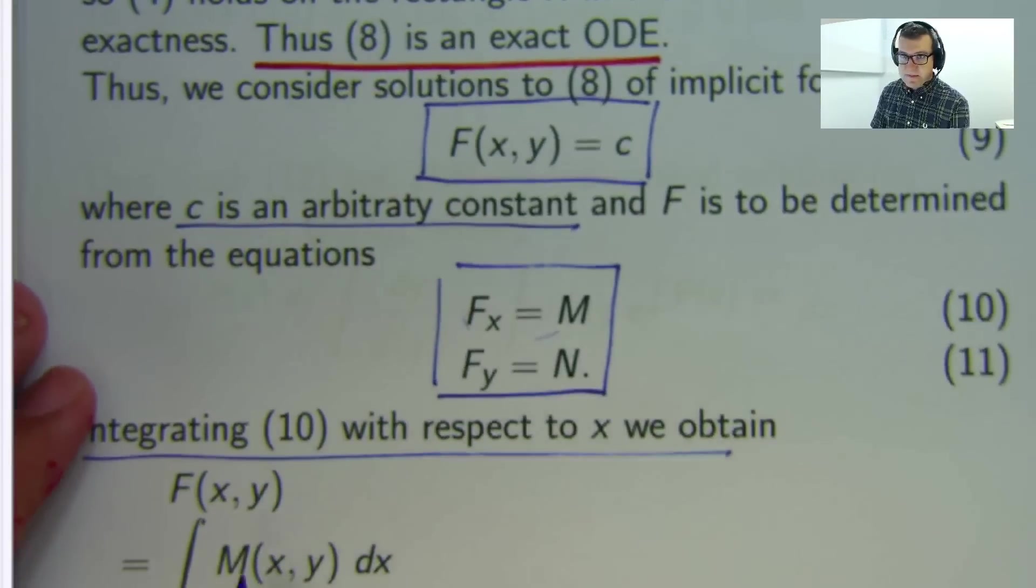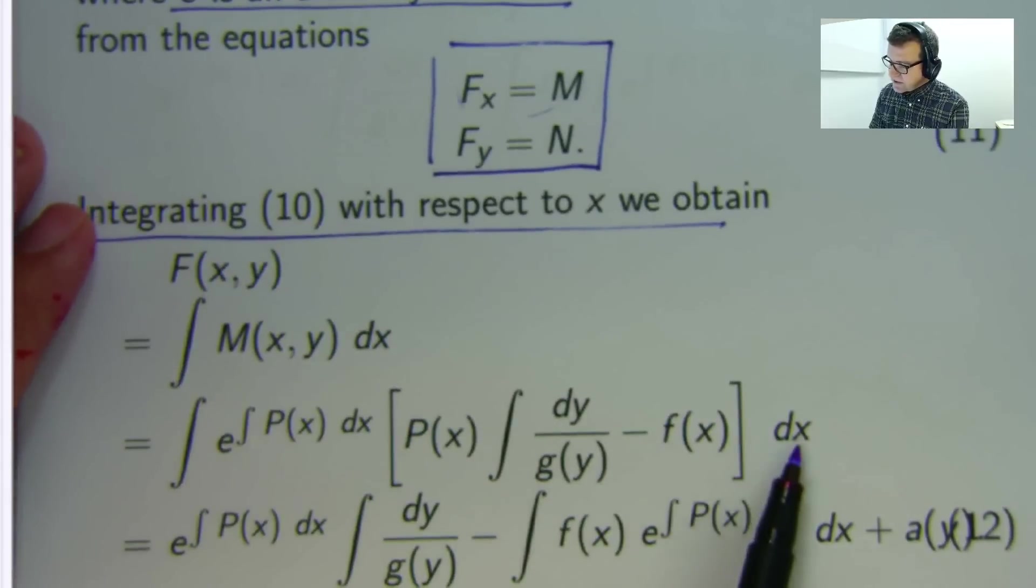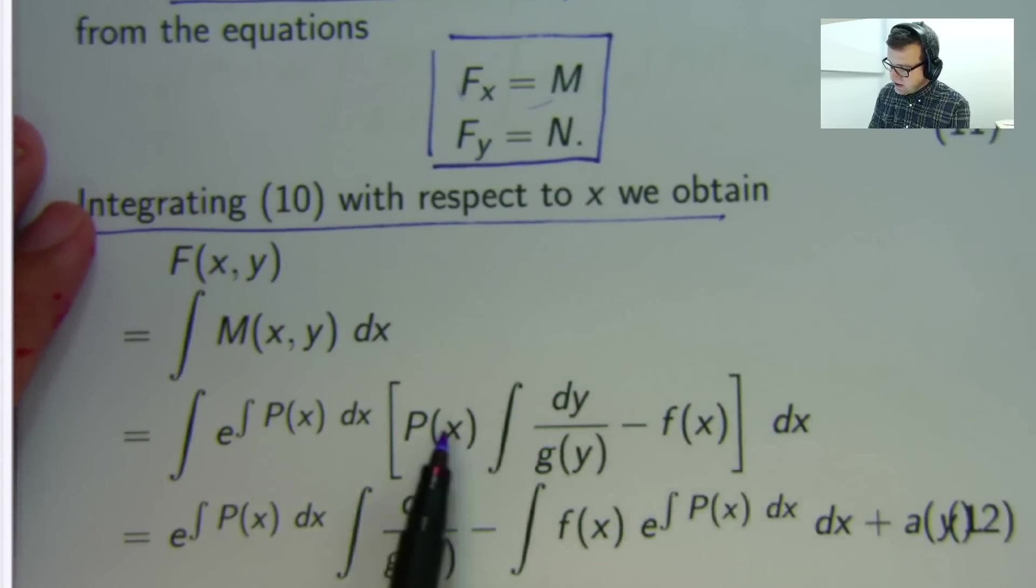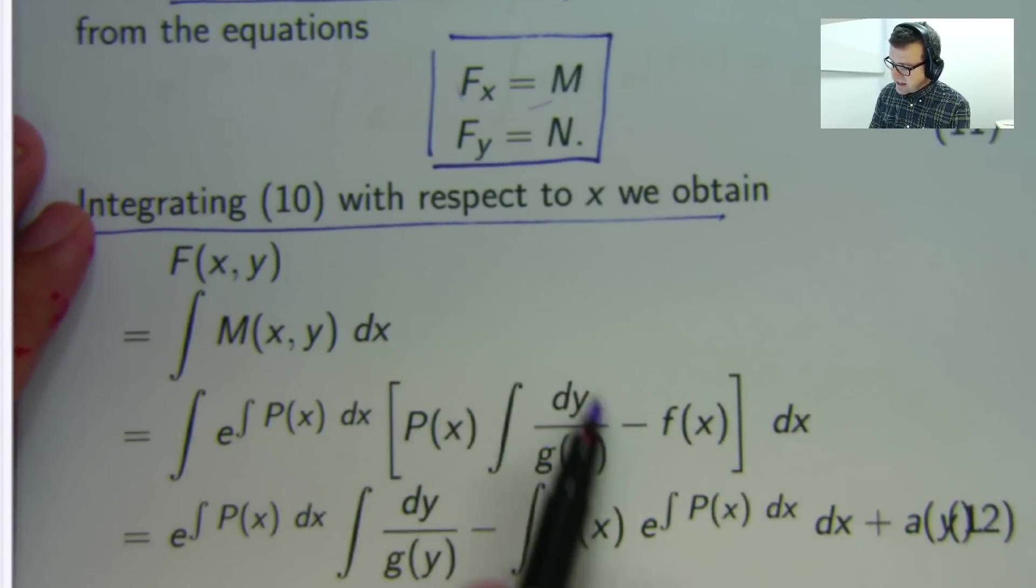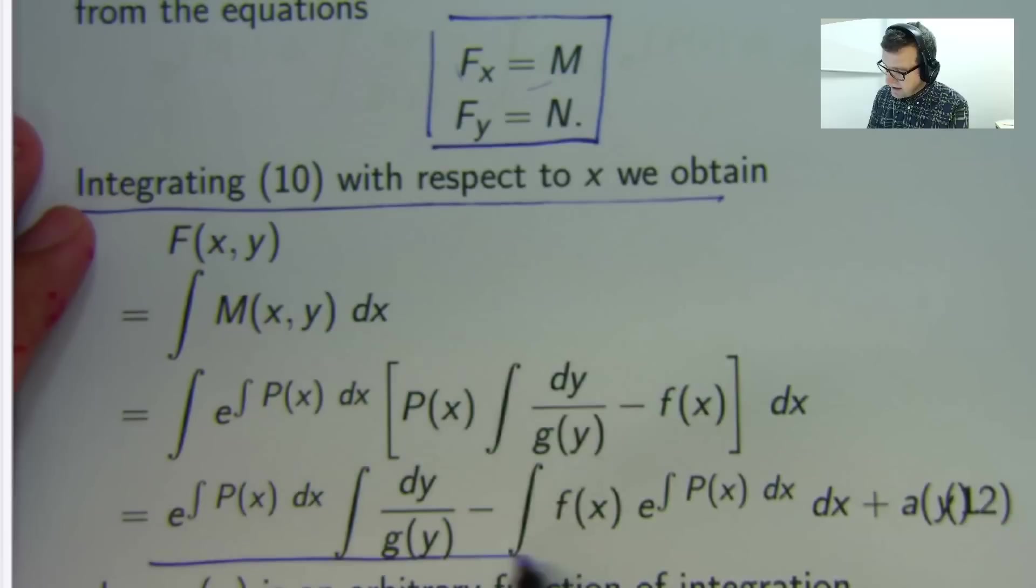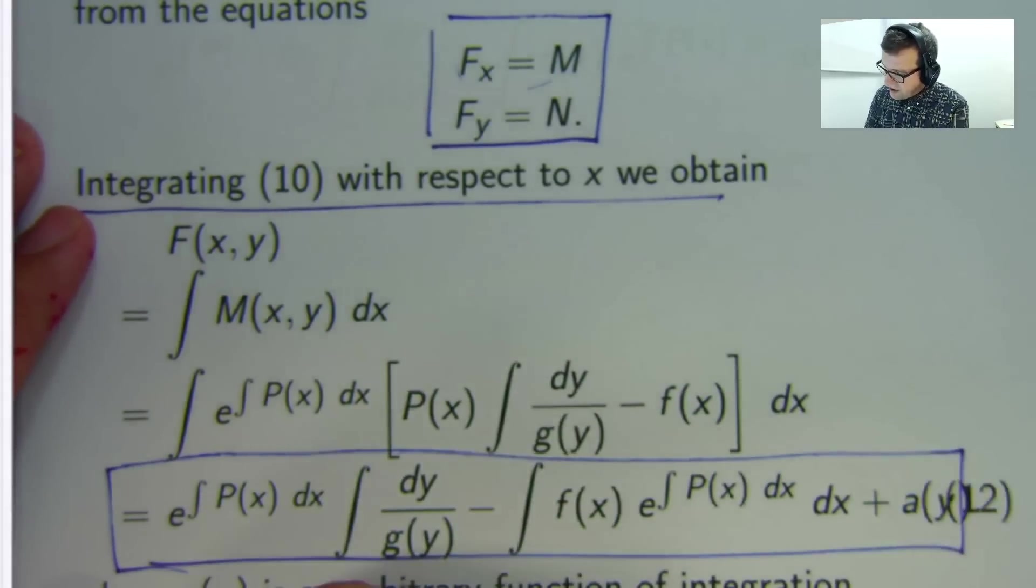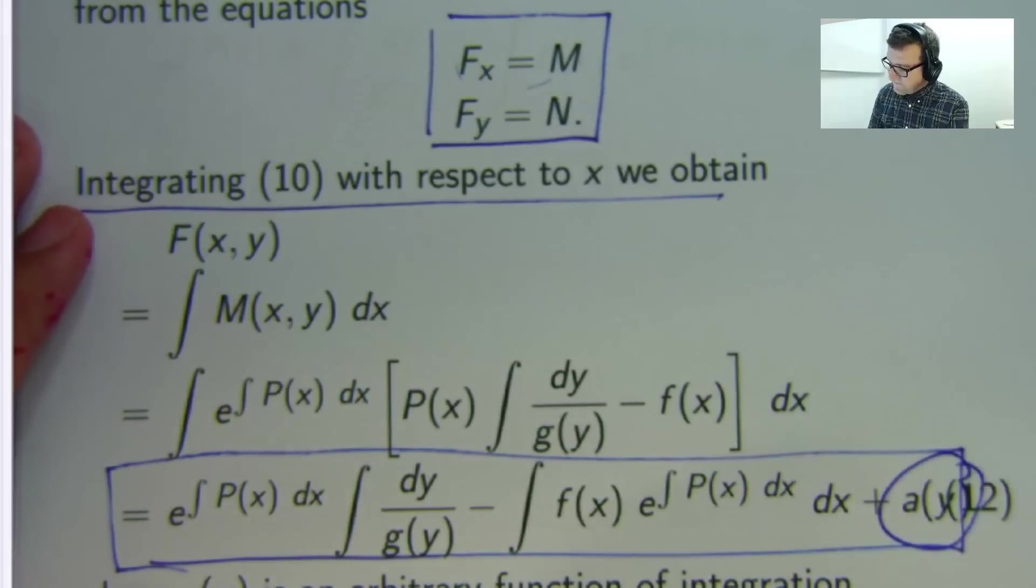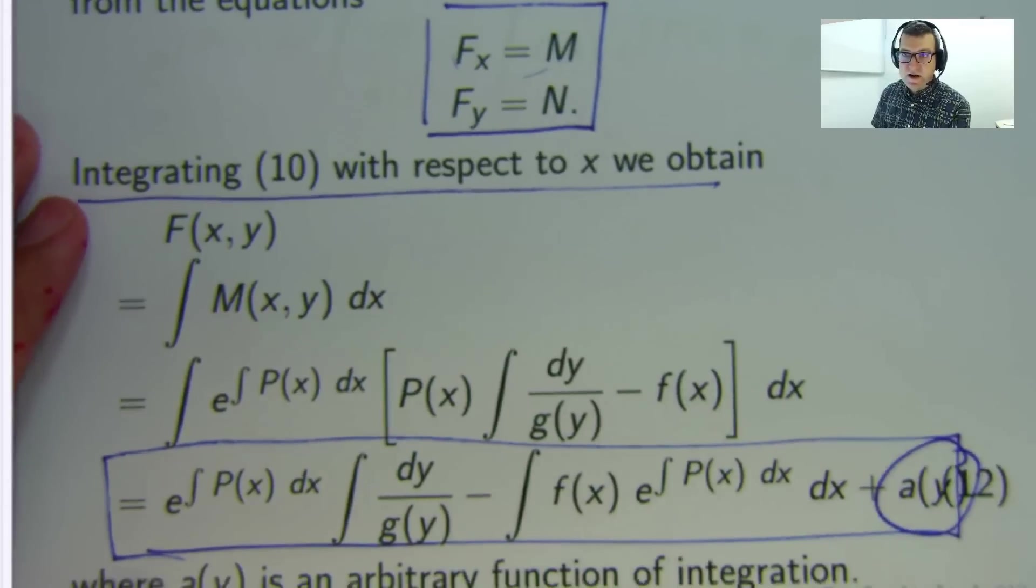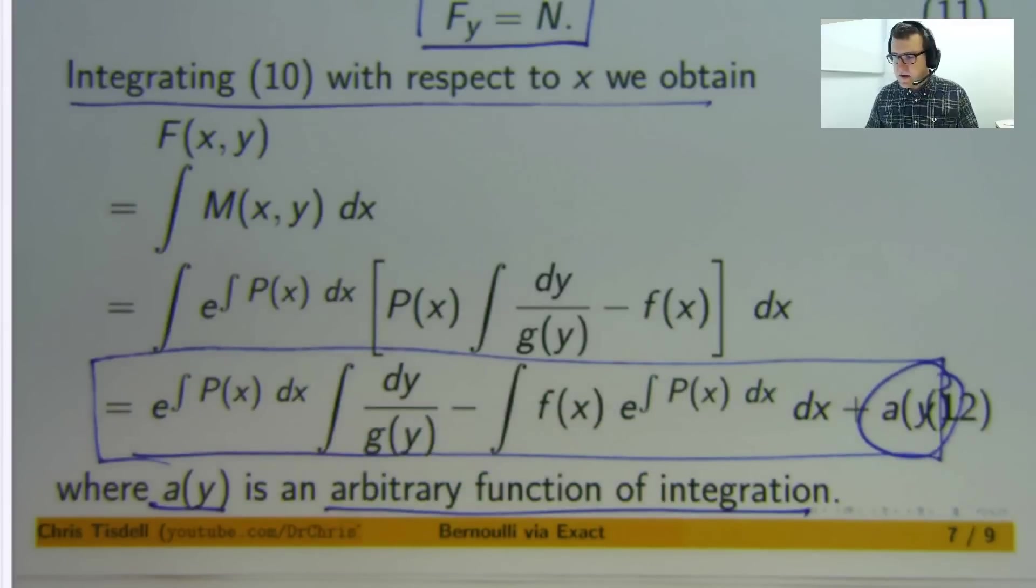So you integrate down here and it's a bit of a mess but the good thing is you're integrating with respect to x. You can combine that up. That doesn't depend on x and so you can simplify a little bit. Now A of y is just your standard arbitrary function of integration because we're dealing with partial derivatives here. So you've got to go beyond constants. Well that looks a bit messy but it's not too hard to work through.